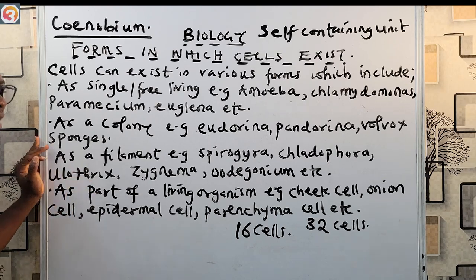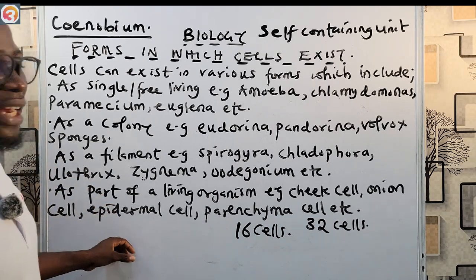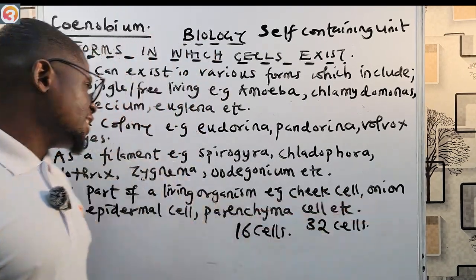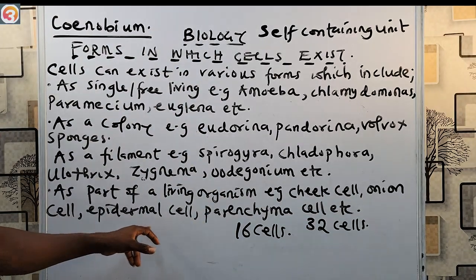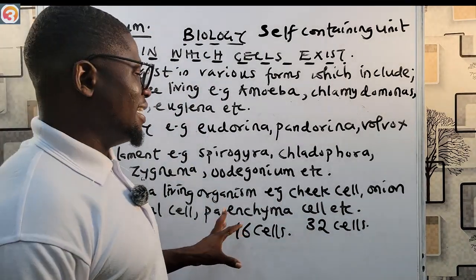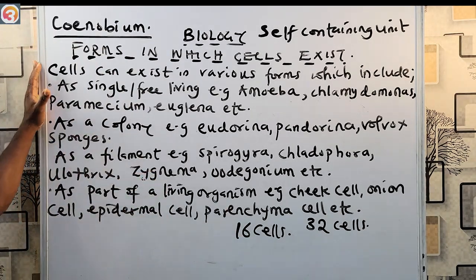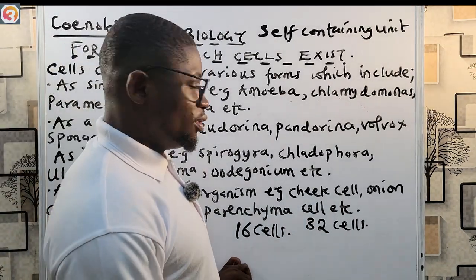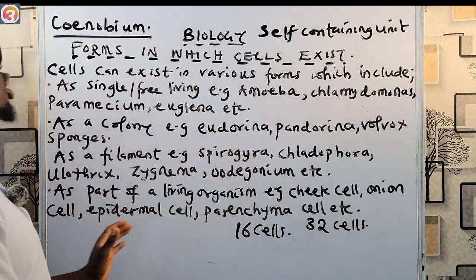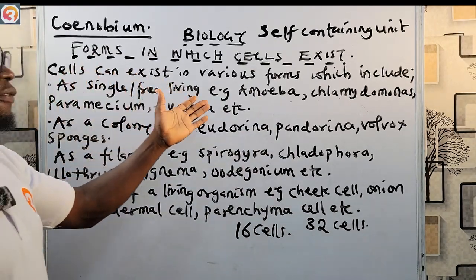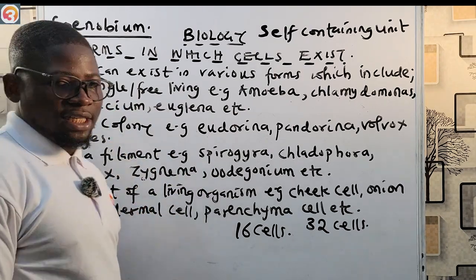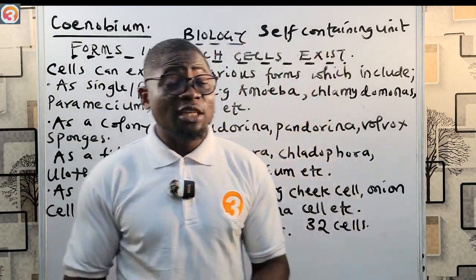The fourth form is existing as part of a living organism. Examples include the chick cell, onion cell, epidermal cell, and parenchymal cell. So the four forms in which cells exist are: single or free living (unicellular), as a colony, as a filament (multicellular), and as part of a living organism.